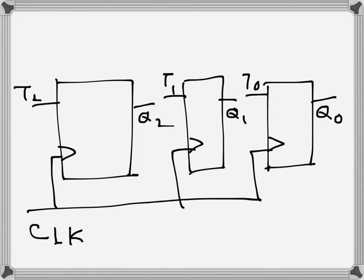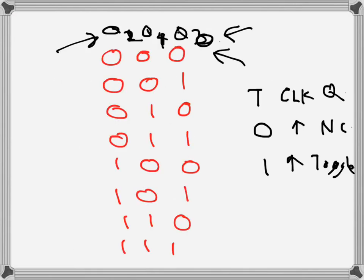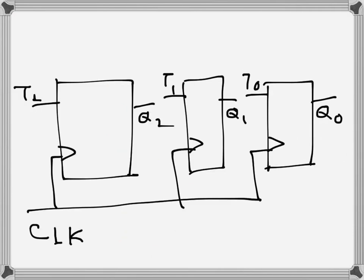If we look at the least significant bit Q0, we can see that the bit is changing with each clock - it's always changing 0, 1. It keeps changing with each clock, so we want it to toggle. We can give a logic one here, basically five volts. So T0 is fixed at one.